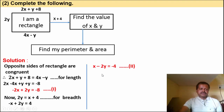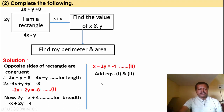Now solve equations 1 and 2. Add them because equation 1 has plus 2y and equation 2 has minus 2y. Writing them: minus 2x plus 2y equals minus 8.